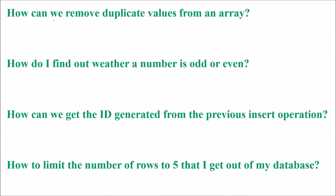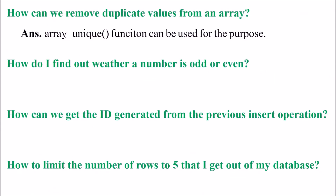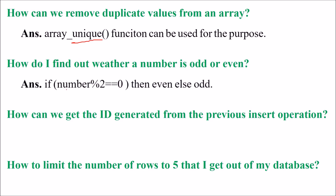How can we remove duplicate values from an array? The array_unique function can be used for this purpose. How do I find out whether a number is odd or even? Just use: number modulo 2 equals 0. If the number gives a remainder of 0, the number is even; otherwise it is odd.